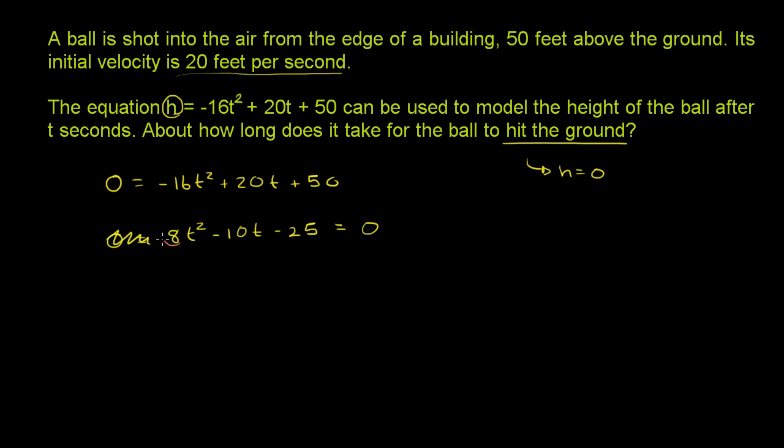We have this in standard form. We know that this is our a, this right over here is our b, and this over here is our c. The quadratic formula tells us that the roots, in this case in terms of the variable t, are going to be equal to negative b plus or minus the square root of b squared minus 4ac, all of that over 2a.